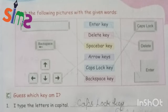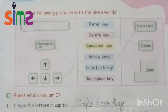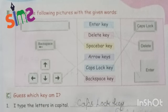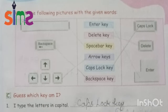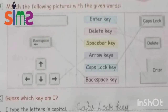So students, as you can see, on the next page we have a matching exercise — matching the following pictures with the given words. We have to match these words with the pictures. On the left side, the topmost picture is a long bar, which we call the space bar key. So we will match it with space bar key. Next, the one that already has its name — backspace key — we will match it with backspace key. Here you can see 4 arrows in different directions, so those are our arrow keys. We will match it with arrow keys.